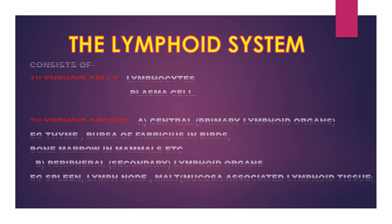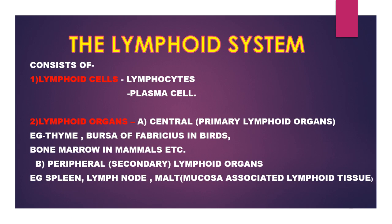The lymphoid system consists of lymphoid cells and lymphoid organs. Lymphoid cells consist of lymphocytes and plasma cells. There are two types of lymphoid organs: first, central or primary lymphoid organs — examples include the thymus and bone marrow in mammals — and second, peripheral or secondary lymphoid organs, such as the spleen and lymph nodes.